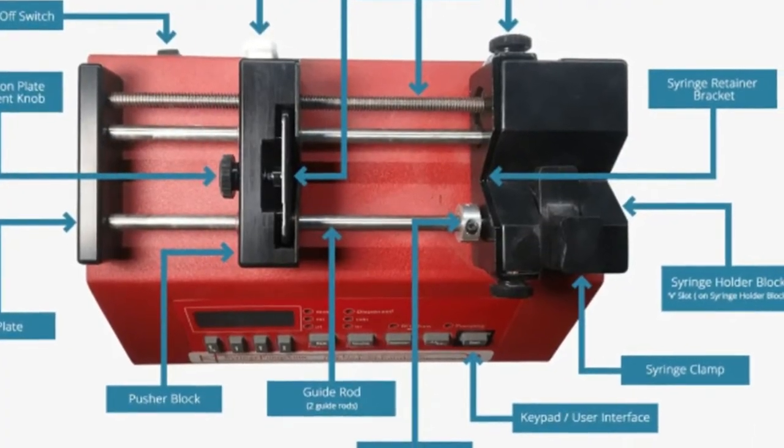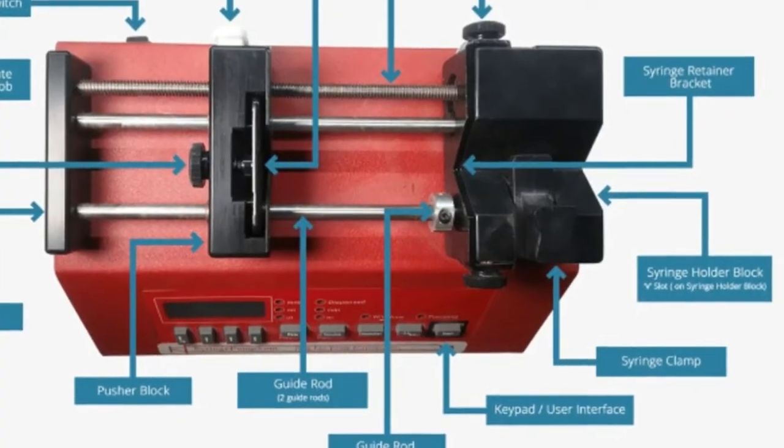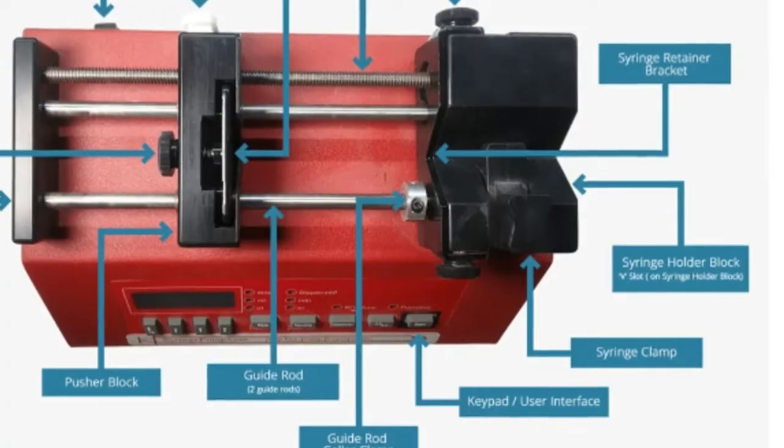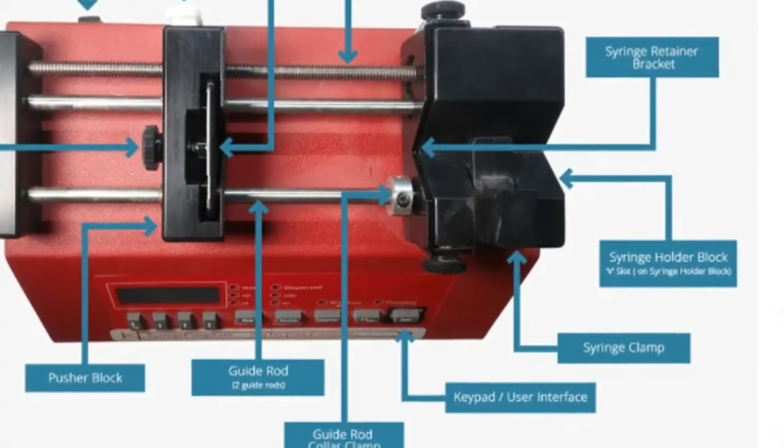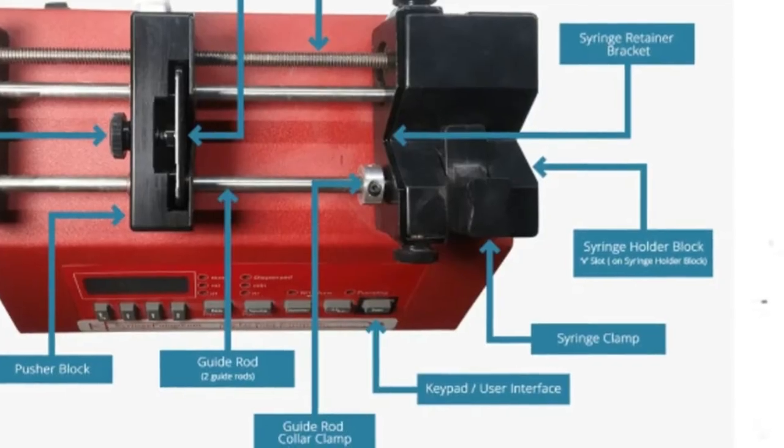The fifth component is the guide rod collar clamp. A collar clamp allows the operator to set a stall point on the pump by limiting the travel of the pusher block. Used to prevent expensive glass syringes from being crushed when the pusher block is driven too close to the syringe retainer bracket and holder block.